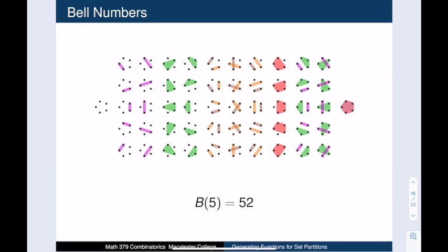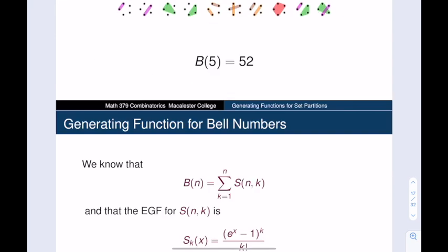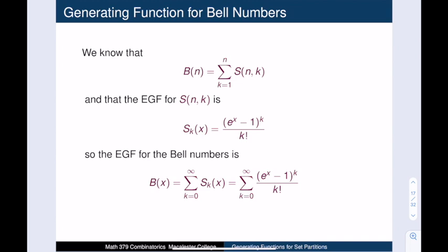This brings us to the Bell numbers, which count the ways to partition the set of n things into any number of non-empty blocks. Let's find the exponential generating function for these numbers. And I have good news for you. We've actually done all the hard work already. We get the nth Bell number by summing the S(n,k) Stirling numbers. Likewise, to obtain the exponential generating function for the Bell numbers, we sum the exponential generating functions for the Stirling numbers.